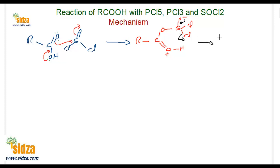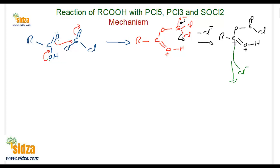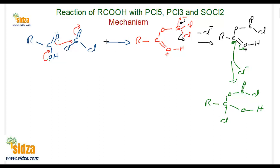One chlorine comes off from sulfur, the electron pair shifts to form a double bond, giving an intermediate: R–C connected to oxygen–S(=O)–Cl, with a positively charged OH still attached to carbon. Cl⁻ is lost, and in the next step that same Cl⁻ attacks the carbonyl carbon. The electron pair shifts back to oxygen, giving an intermediate with Cl on carbon, OH on carbon, and an O–S(=O)–Cl group.